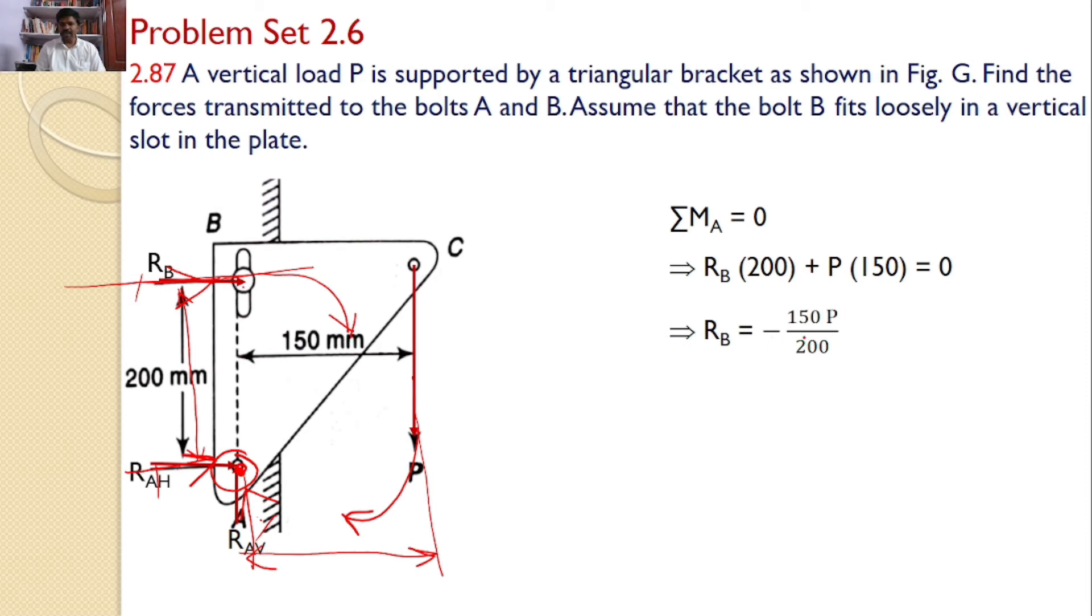Hence, I will get RB equals minus 150P by 200. What is the meaning of this minus here? Initially, we assumed the direction is towards right side. Since I got negative, the direction of the force developed at B is opposite. In this direction, RB will develop and the magnitude is 0.75P. So, towards left side.